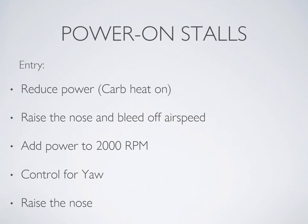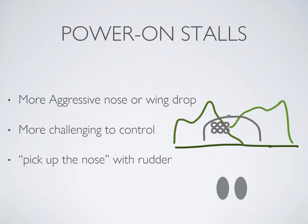Now that the safety stuff is done, we're going to go into the power on stall. First, you're going to pull carb heat out and reduce power. Next, allow the airspeed to bleed off — don't lose any altitude — and go towards a slow flight condition. Then add about 2,000 RPM of power, control for yaw, and once you have that power input, raise the nose to induce a stall. This type of stall will likely be more aggressive than the previous power off stall, so it's critically important that you do not allow a wing drop. If the nose starts to wander or fall to one side, pick it up with the rudder.